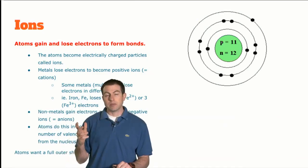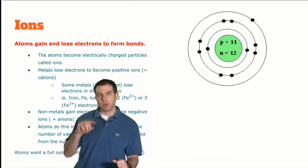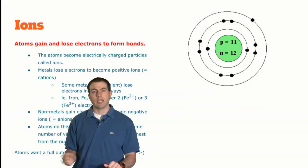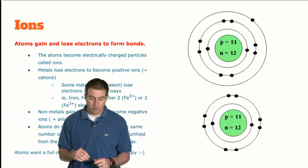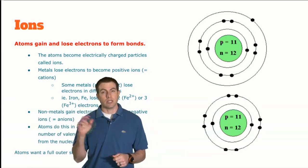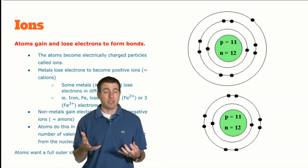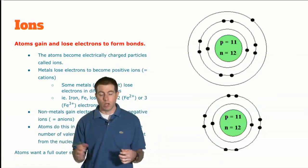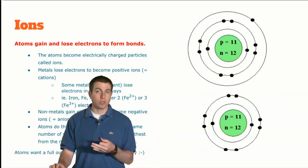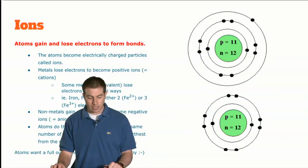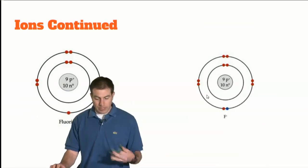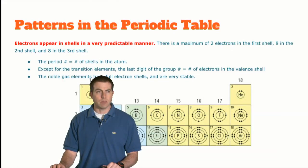Ions are atoms that have a charge. If the number of protons and electrons is unbalanced, you end up with an ion — we no longer call it an atom. Sodium, element 11, has one electron in its outer shell. It's easier to get rid of one electron than to gain seven, so it loses that electron, leaving 10 electrons but 11 protons — giving it a positive charge. Fluorine, on the other hand, gains an electron.